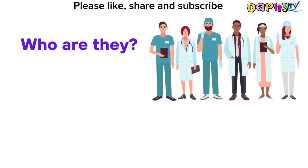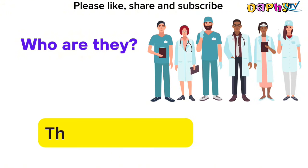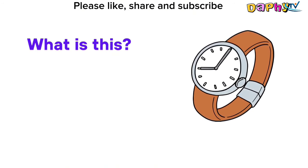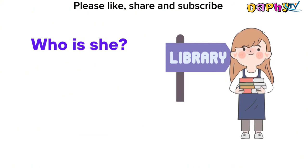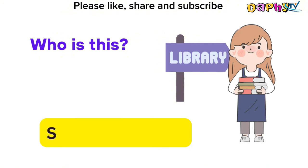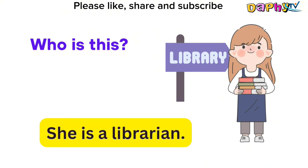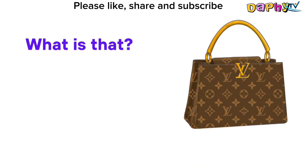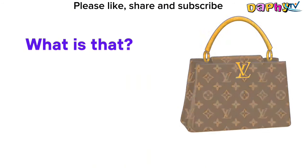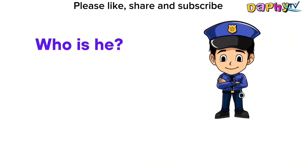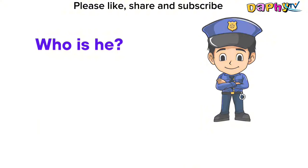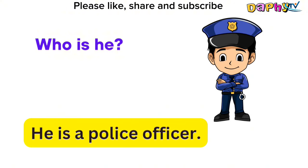Who are they? They are players. What is this? It is a watch. Who is she? She is a librarian. What is that? It is a bat. Who is he? He is a police officer.